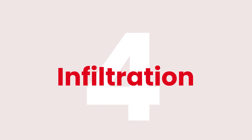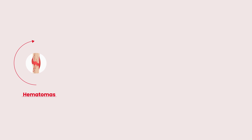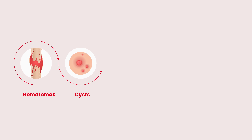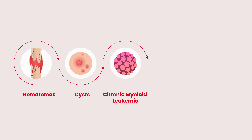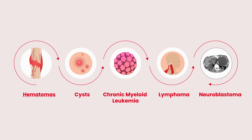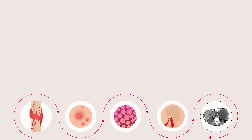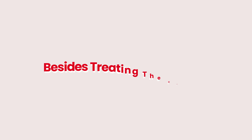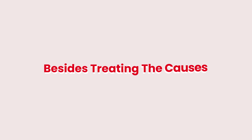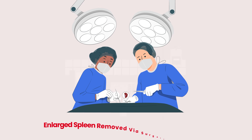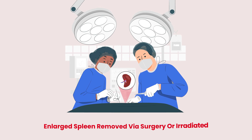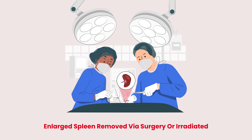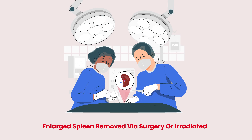Finally, infiltration from hematomas, cysts, CML, lymphoma, and neuroblastoma. Besides treating the underlying cause, the enlarged spleen can be removed via surgery, for instance a splenectomy, or irradiated.